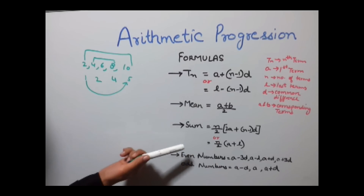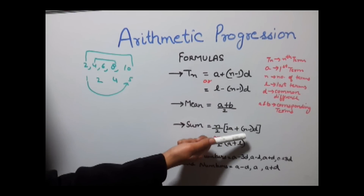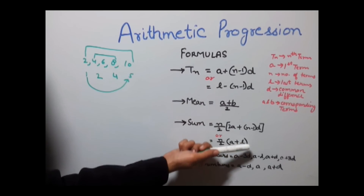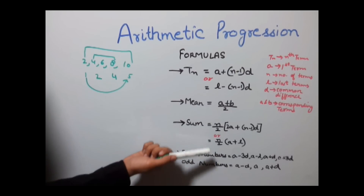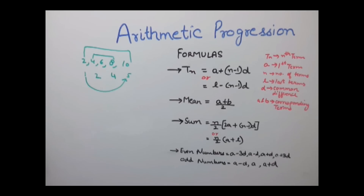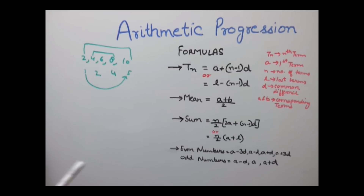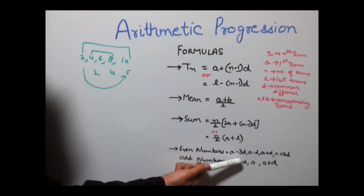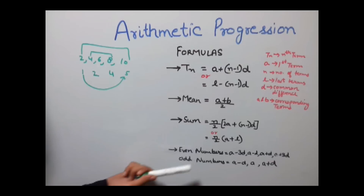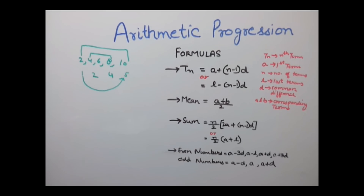To find the sum of an AP, the formula is (N/2) × (2A + (N−1) × D), where N is total number of terms, A is the first term, and D is the common difference. Alternatively, you can use N/2 × (first term + last term). If a question requires assuming an even number of terms (4, 6, 20 terms), assume the series as A−3D, A−D, A+D, A+3D. For an odd number of terms, assume A−D, A, A+D.